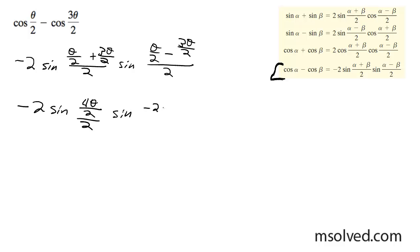sine negative 2 theta divided by 2 divided by 2. I'm going to write this negative 2 sine 4 theta divided by 4, sine negative 2 theta divided by 4.